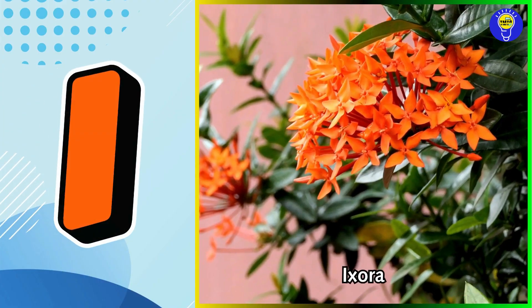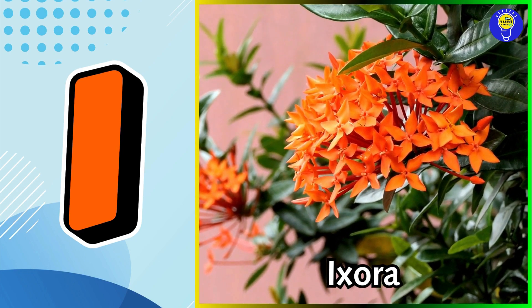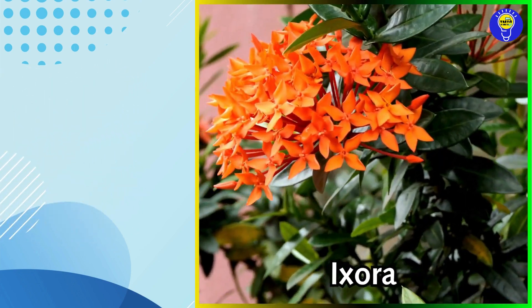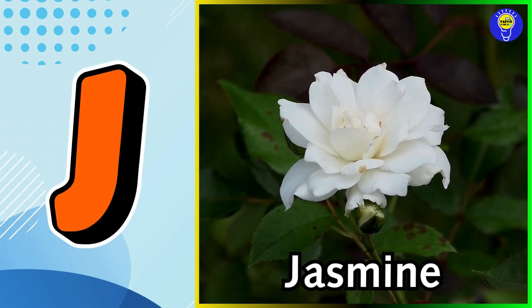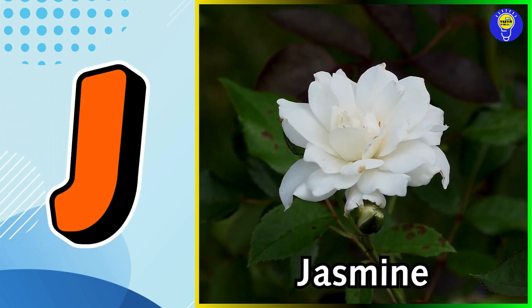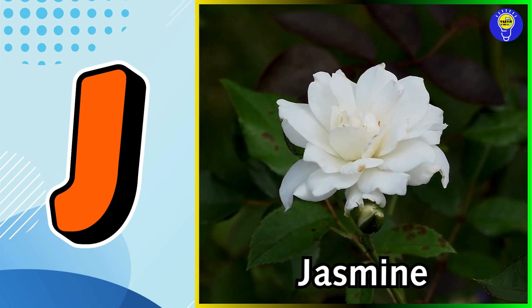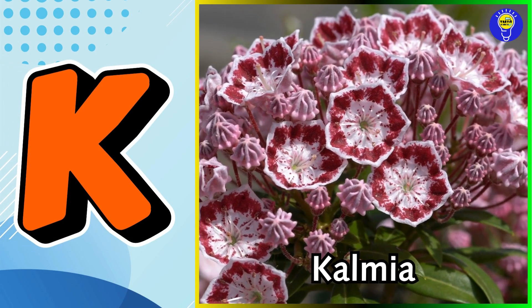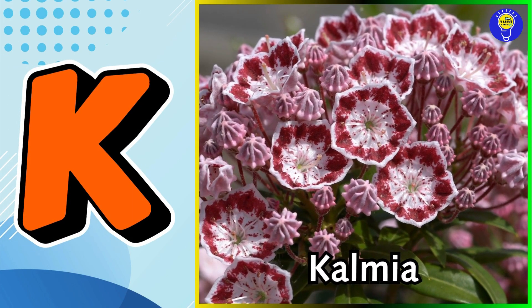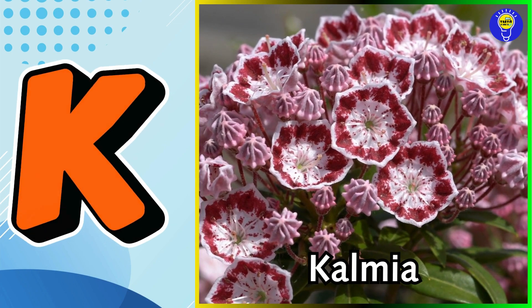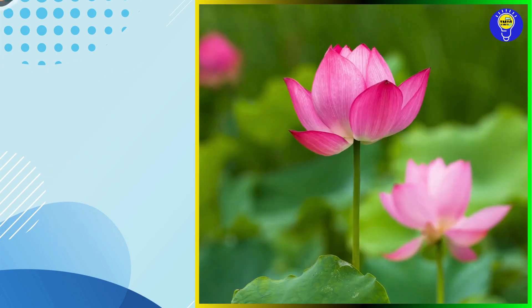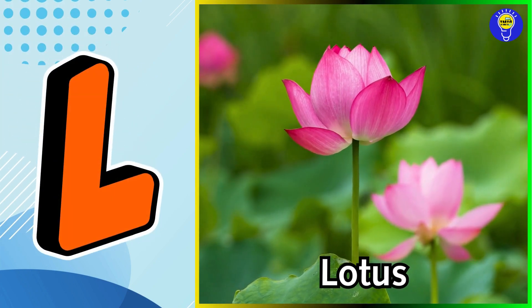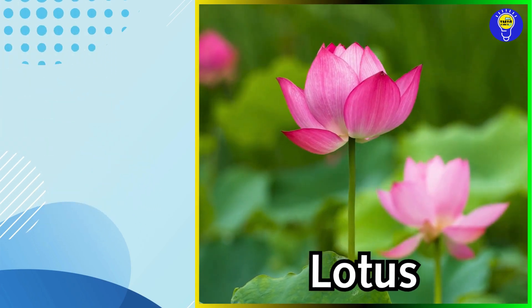I is for ixora flower. J is for jasmine flower. K is for kalmia flower. L is for lotus flower.